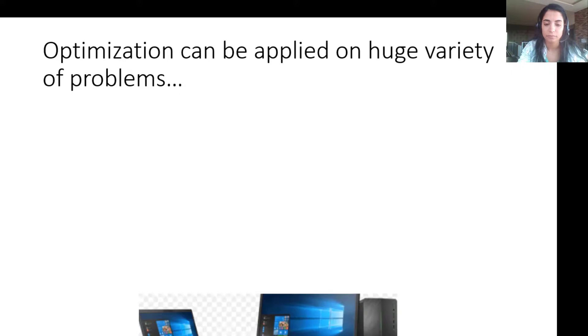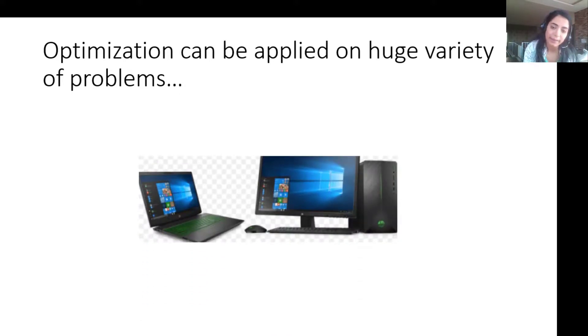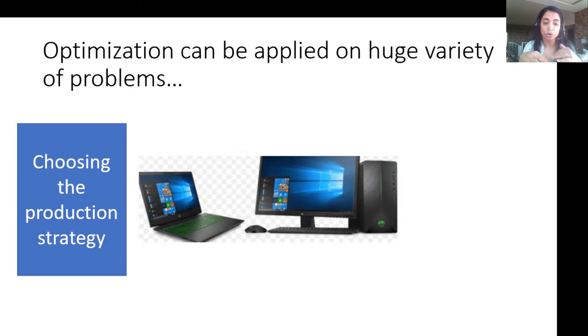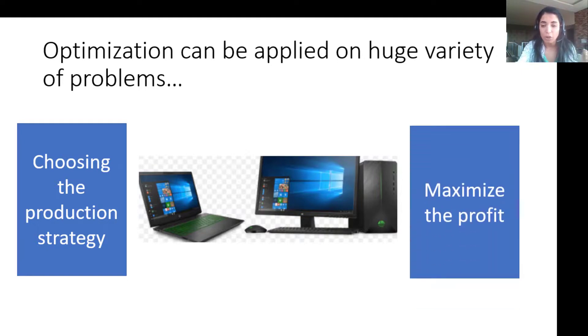For example, let's say that I have a company that is producing a certain number of laptops and a certain number of desktops. And I need to choose the best production strategy which means how many laptops should I produce and how many desktops should I produce to have the maximized profit while maintaining some constraints like the capacity of this company.